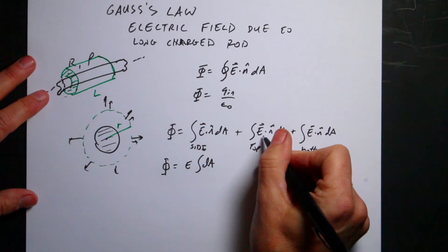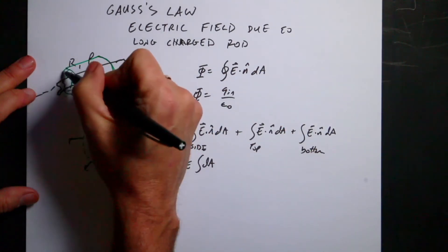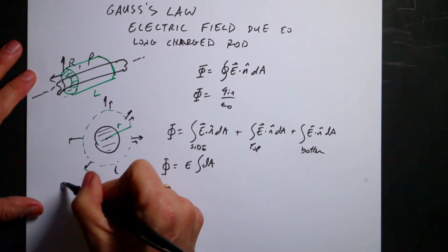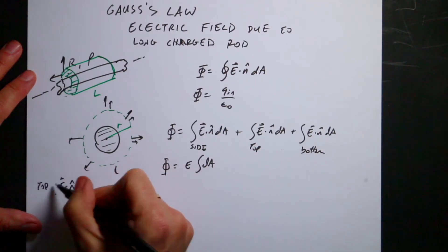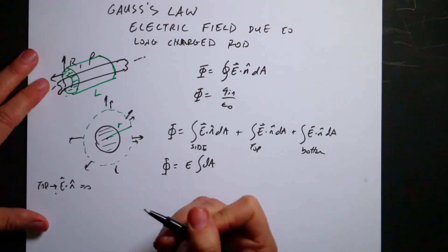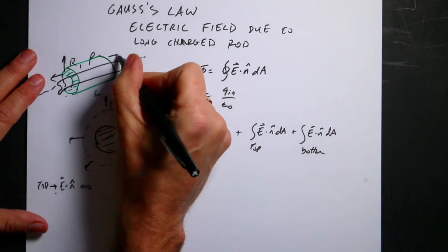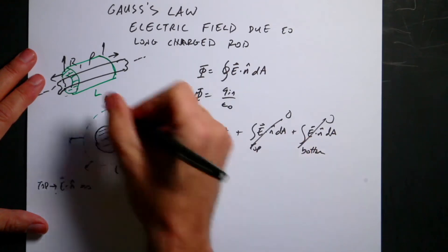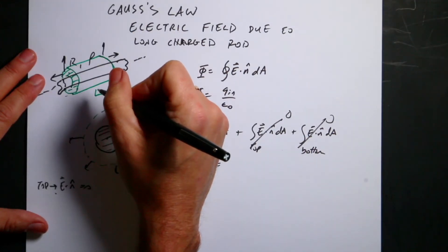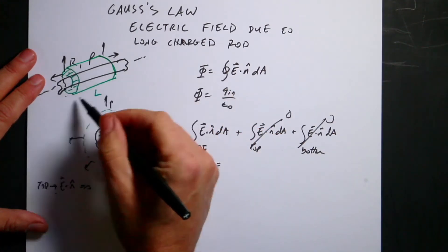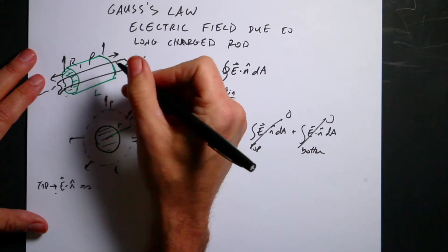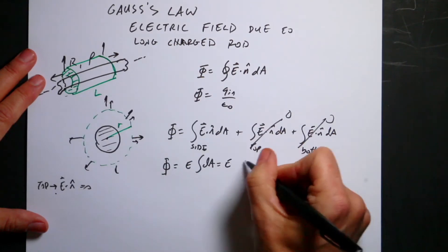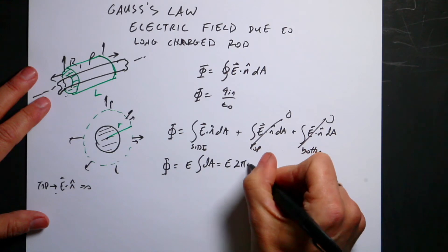On the top cap, the electric field points radially outward but N-hat points straight up — they're perpendicular — so E dot N-hat equals zero. Same thing on the bottom cap. So those two integrals are zero. For the side, it's just E times the surface area of the cylinder. If you unroll the cylinder it's a rectangle with width 2πR and height L, giving E times 2πRL.